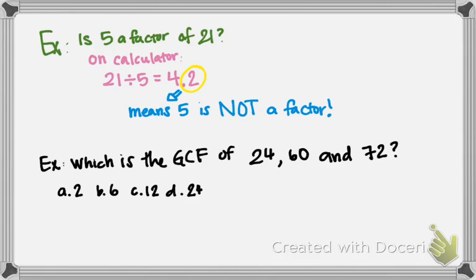Is it 2, 6, 12, or 24? Because I'm looking for the greatest common factor, which number should I start with? Should I start with 2, 6, 12, or 24? If you said 24, great. You should always start with the biggest because you're looking for the greatest common factor.